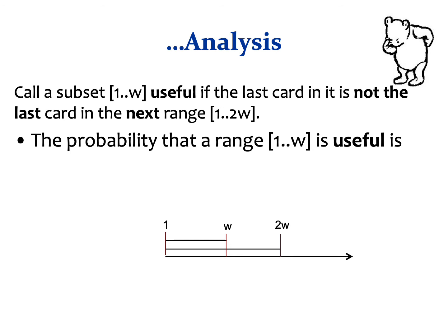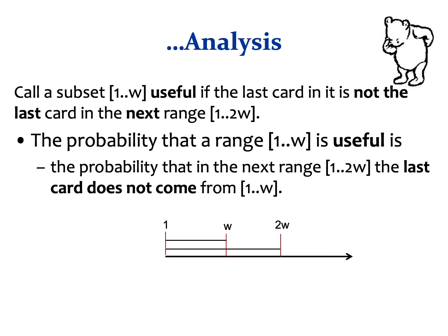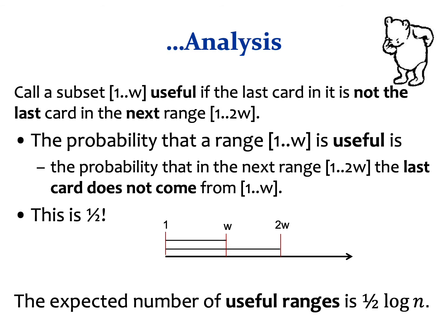Consider the event that a subset {1..w} is useful — that is, that the last card from {1..w} is not the last card in the next range {1..2w}. The probability for that event is the probability that in the range {1..2w}, the last card does not come from {1..w}. Since permutations are sampled uniformly at random, each card from {1..2w} has the same probability to be drawn last. Therefore, the probability for that event is exactly half. By linearity of expectation, the expected number of useful subsets is exactly half log n.